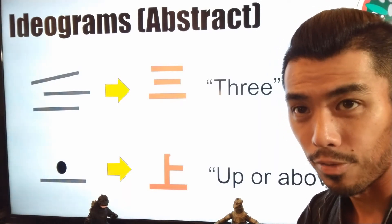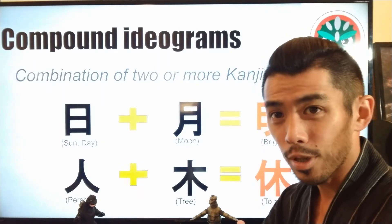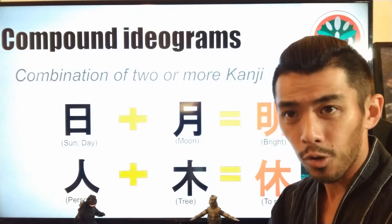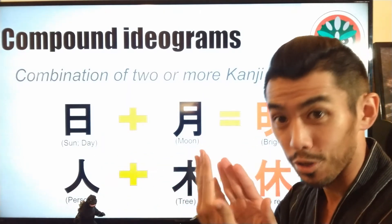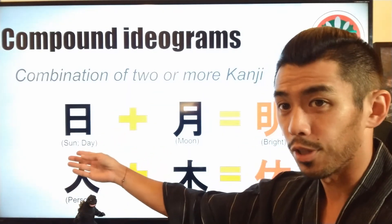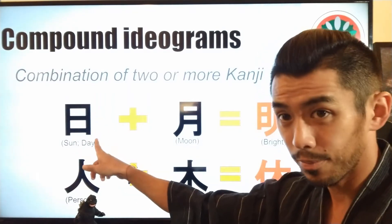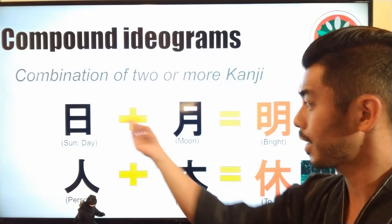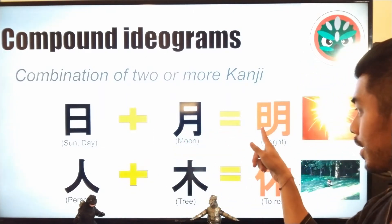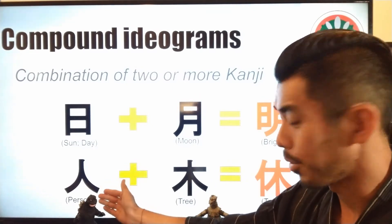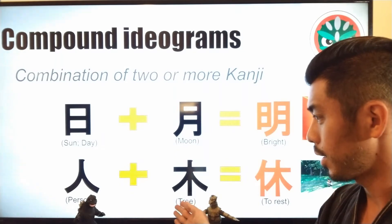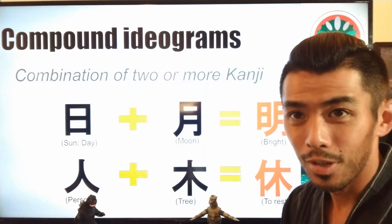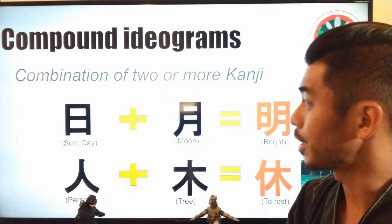Next is the example of compound ideograms, which means kanji can also be formed from a combination of different kanji put together. For example, here's the kanji for sun or day — 'hi' — plus the kanji for moon. You combine the sun and the moon together and you get the word 'bright.' Here's another example: the kanji for person combined with the kanji for tree gives you 'to rest,' or 'yasumu.'